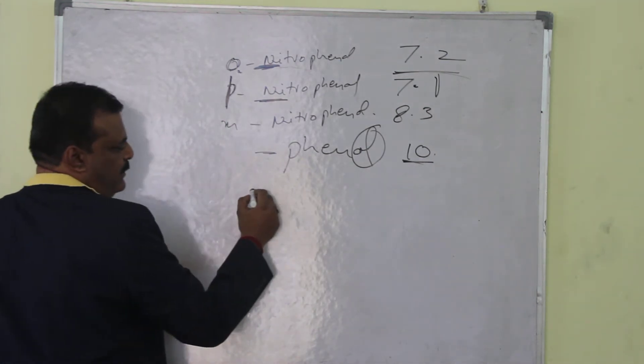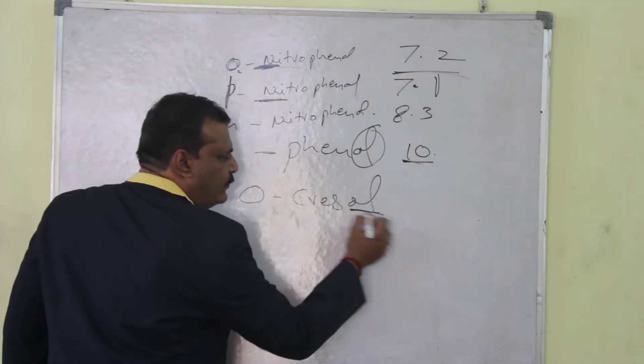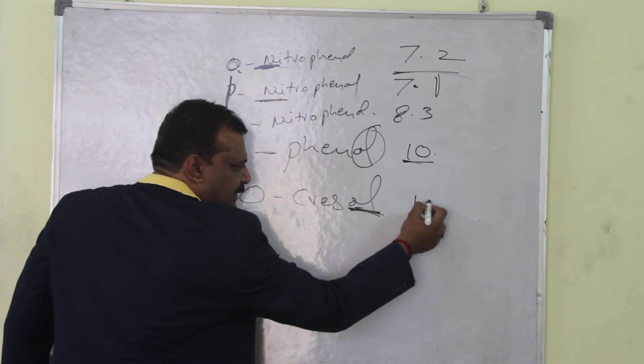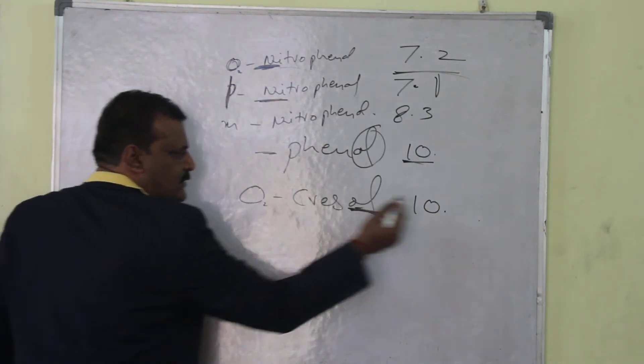And cresol, ortho cresol. I told you, without nitrogen, take this value as 10. And here oxygen is there, oxygen value is O2, so that is the same.